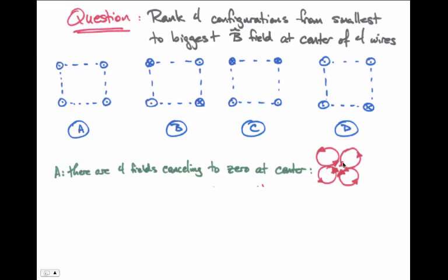we notice that the upper right-hand wire has a magnetic field pointing down and to the right, the lower left-hand wire has a field pointing up and to the left, and these two cancel one another. By the same token, the upper left wire and the lower right wire have magnetic fields that also cancel one another, so the magnetic field at the center of case A is zero.